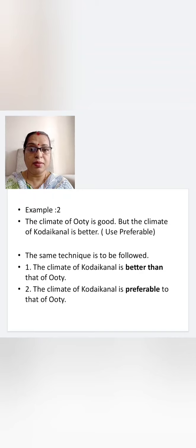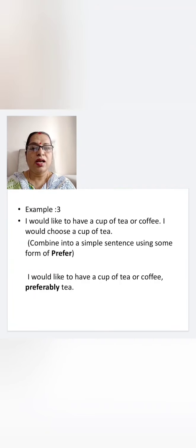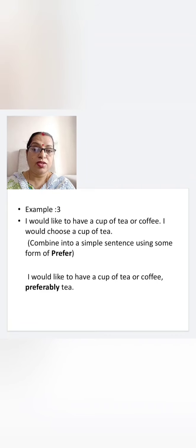Next example: 'The climate of Ooty is good, but the climate of Kodaikanal is better.' Use 'preferable'. The same technique is to be followed: 'The climate of Kodaikanal is better than that of Ooty.' Next: 'I would like to have a cup of tea or coffee. I would choose a cup of tea.' Combine into a simple sentence using some form of 'prefer': 'I would like to have a cup of tea or coffee, preferably tea.'